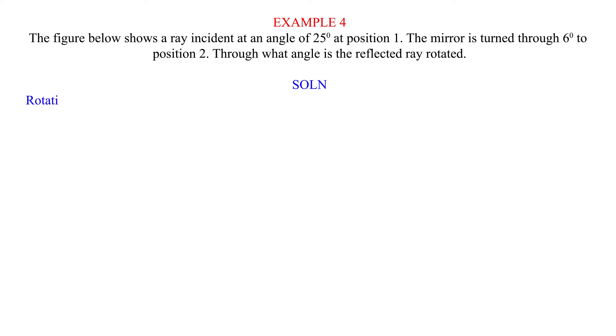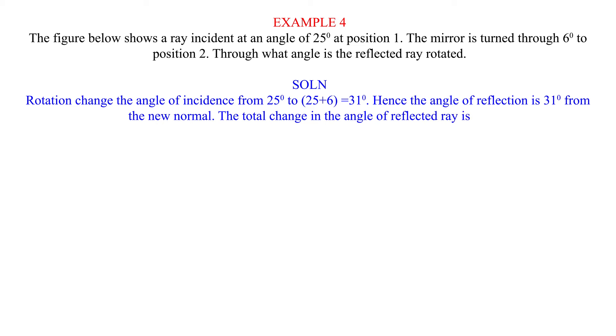Solution. Rotation changes the angle of incidence from 25 degrees to 25 plus 6, equals 31 degrees. Hence the angle of reflection is 31 degrees from the new normal. The total change in the angle of reflected ray is 12 degrees.